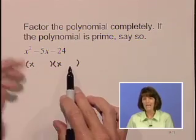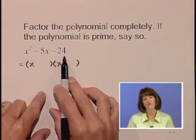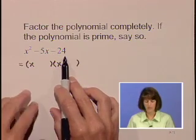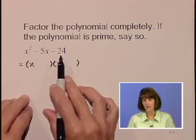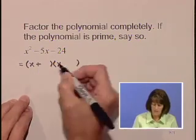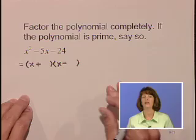Now, with the second part, here we're looking for factors of negative 24 that sum to negative 5. To get a product of negative 24, we know that one of these factors must be positive and the other negative.